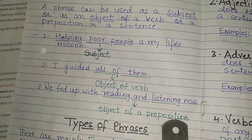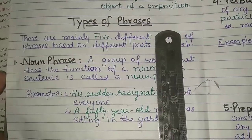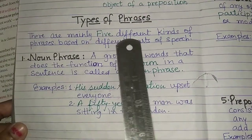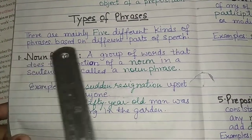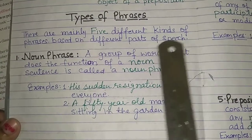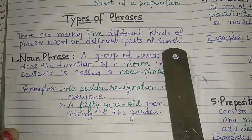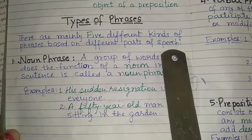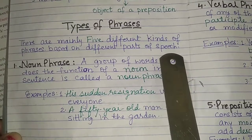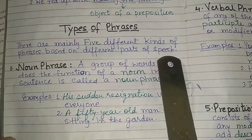Now come to the types of phrases. There are mainly five different kinds of phrases based on different parts of speech. As you all know, there are eight parts of speech: noun, pronoun, verb, adjective, adverb, preposition, conjunction, and interjection.